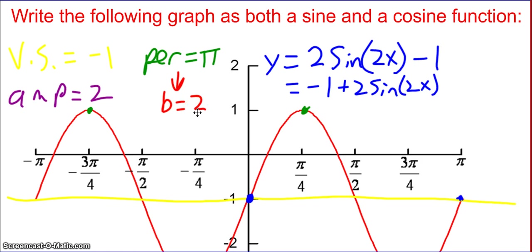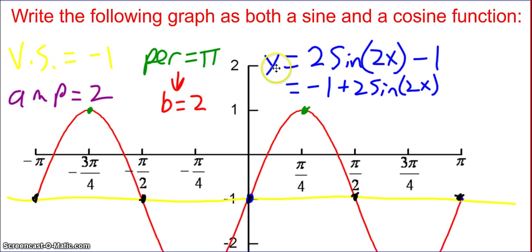For sine, remember it has to start on the axis somewhere. I chose to start at zero because that's the easiest option, and starting there makes it a positive sine curve. So the sine function is y equals two sine of two x, minus one. You could also write it as negative one plus two sine of two x. There are other correct answers, but this is the easiest.